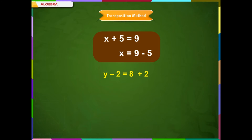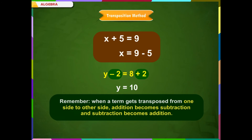The next important point of this method is: whenever a term is subtracted on one side, we can transpose it to the other by adding it. For example, if y minus 2 is equal to 8, then this minus 2, which is present on the left-hand side when transposed, gets added to the right-hand side. And thus, y is equal to 10. Remember, when a term gets transposed from one side to the other, addition becomes subtraction and subtraction becomes addition.